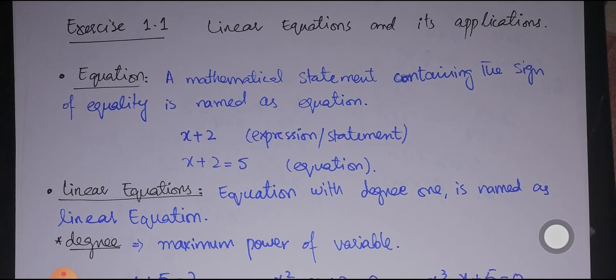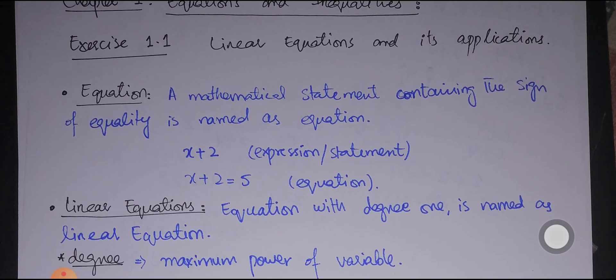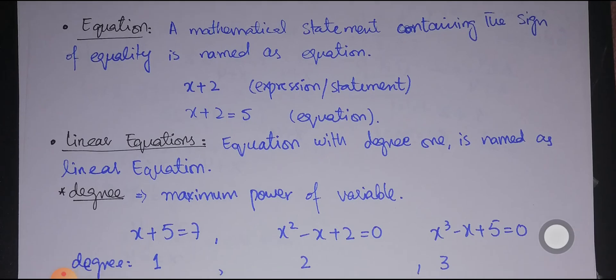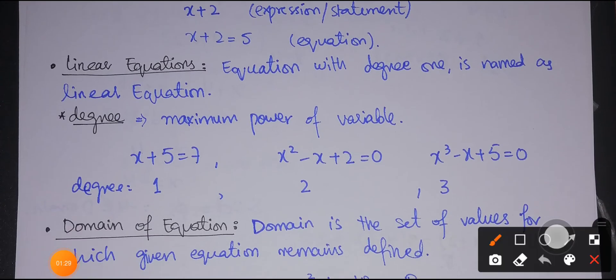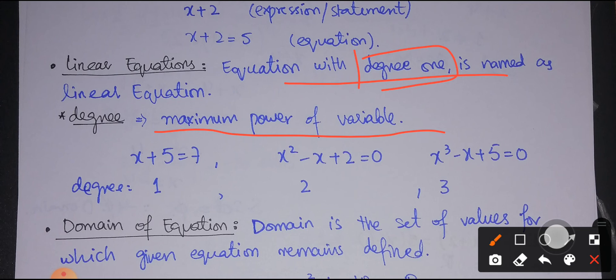Next we have linear equations. A linear equation is an equation with degree 1. Degree is basically the maximum power of the variable. So a linear equation is an equation in which the maximum power of the variable is 1. For example, in the equation 'x plus 5 equals 7,' the maximum power of the variable is 1, so its degree is 1 — making it a linear equation.